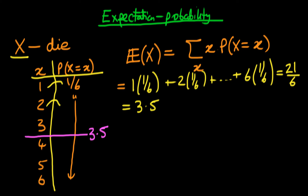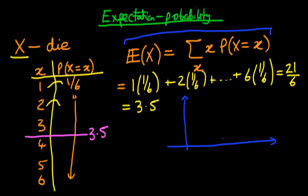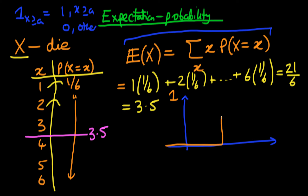How can we apply this rule to an indicator function? Let's consider the indicator function I(X ≥ A), which takes the value 1 if X is greater than or equal to A, and 0 otherwise. If we draw this function, it's 0 up until X equals A, and then it becomes 1.